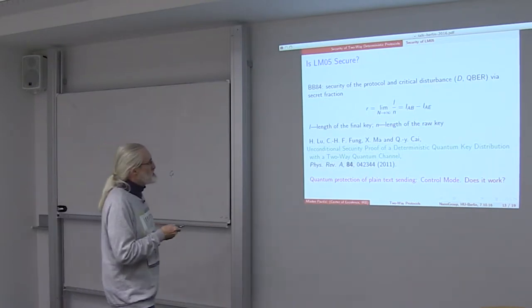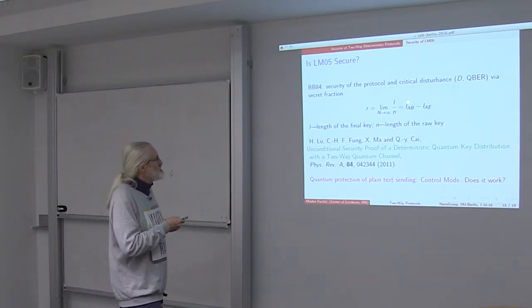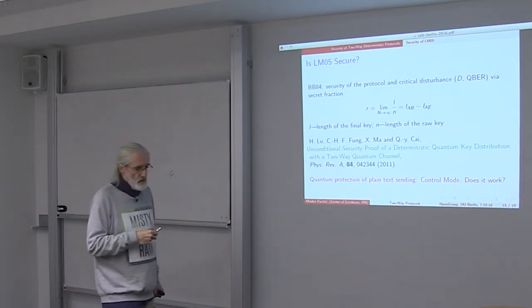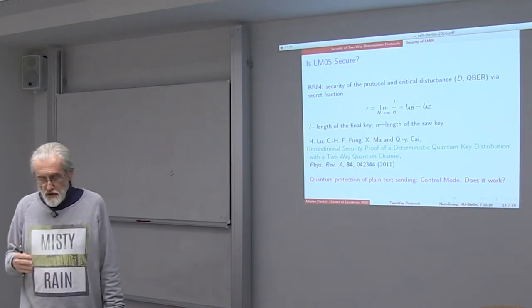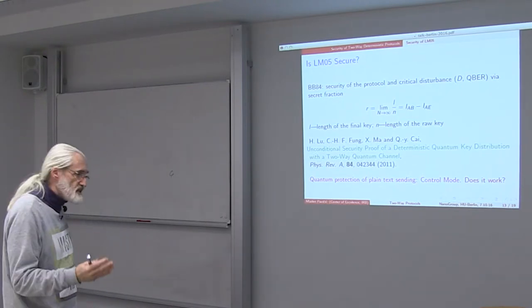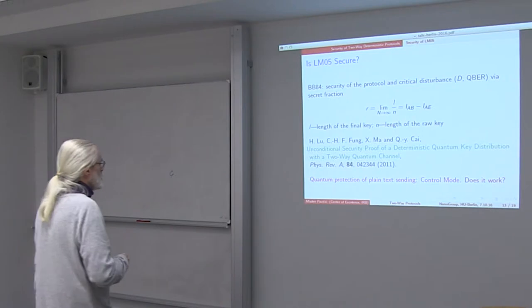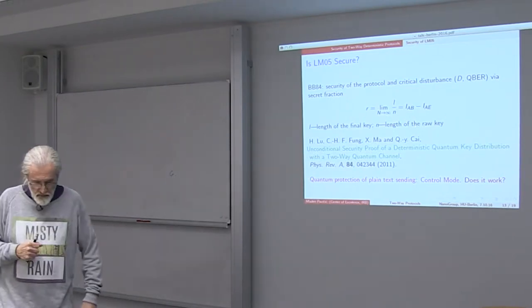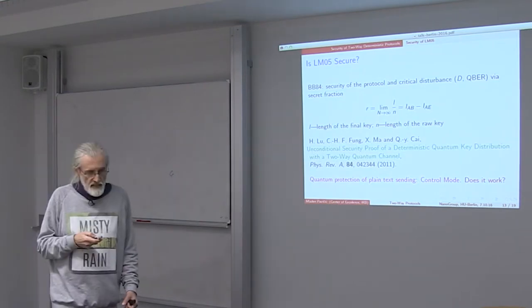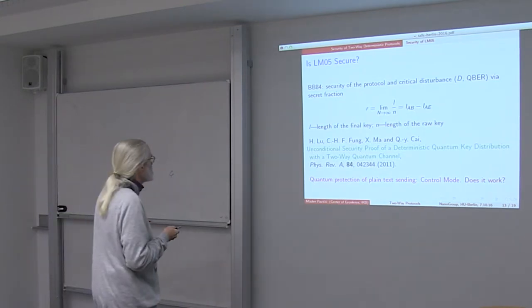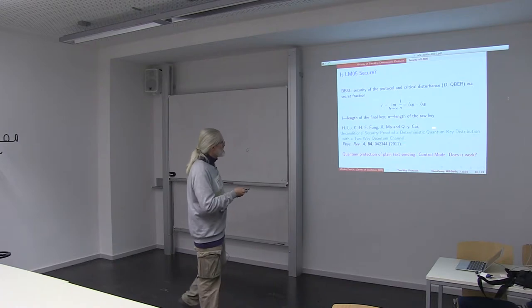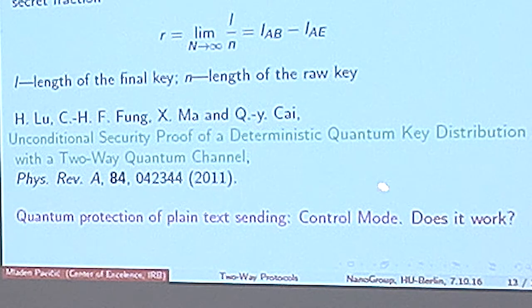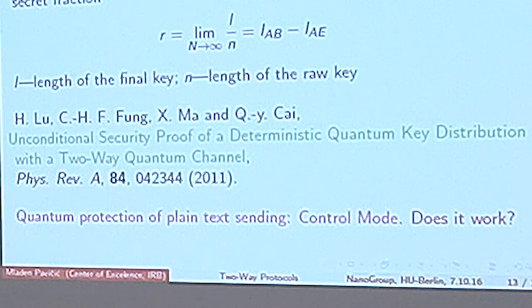Approaching 0 but not being negative as in the case of BB84, where the mutual information between Alice and Eve exceeds the mutual information between Alice and Bob already at the level of 11% of the disturbance within the message mode. With that reference to the standard approach to the evaluation of the secret fraction that Alice and Bob are left with, we should consider a recent proof of security of the LM05 protocol which the authors called unconditional.